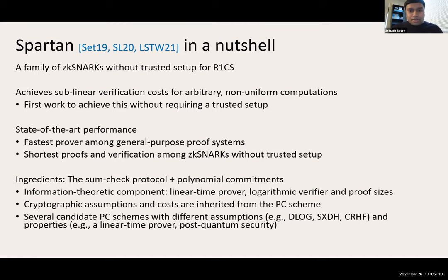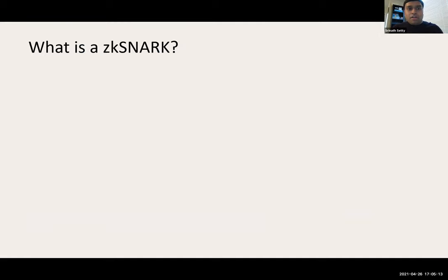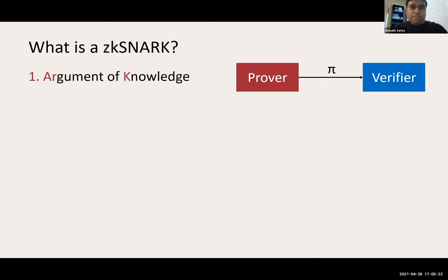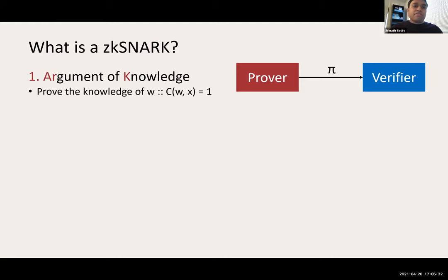Before I go deeper, I'm going to recall what a ZK-SNARK is. It's an argument of knowledge — a protocol between a prover and a verifier where the prover wants to prove knowledge of some witness for some NP statement by producing a proof. For example, given a circuit C, it wants to prove that it knows some secret witness W such that running the circuit with the secret witness and some public input X produces one as the output.